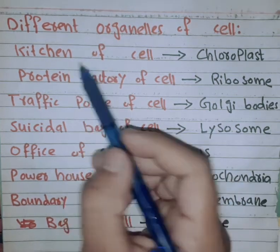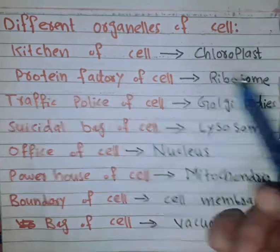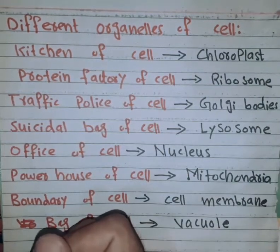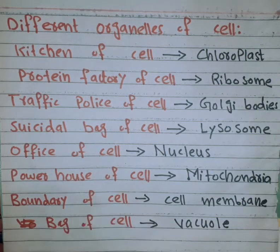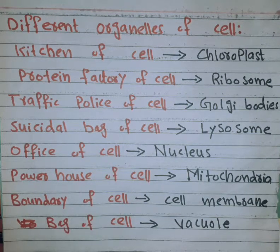The parts of the cell are called organelles. The organelles include chloroplasts, ribosomes, lysosomes, nucleus, mitochondria, and more.